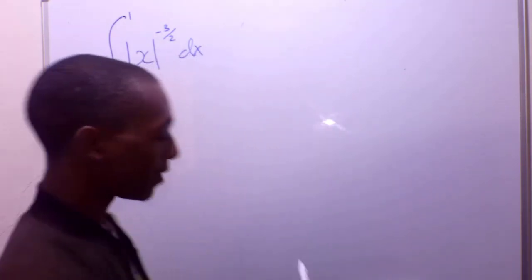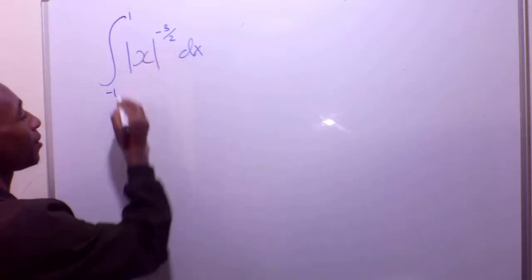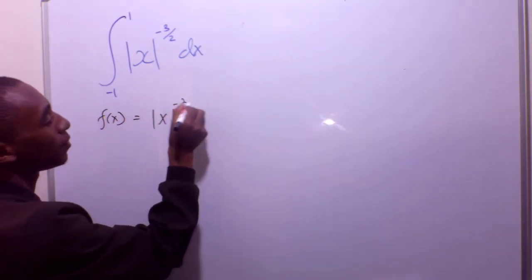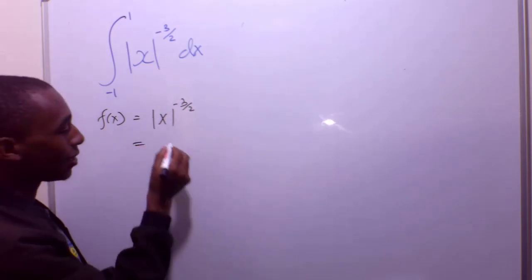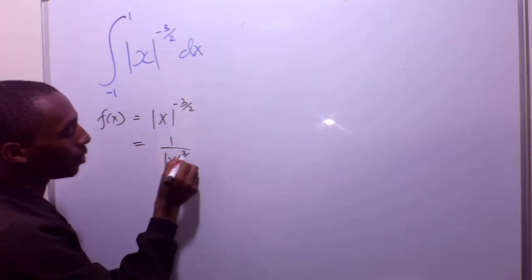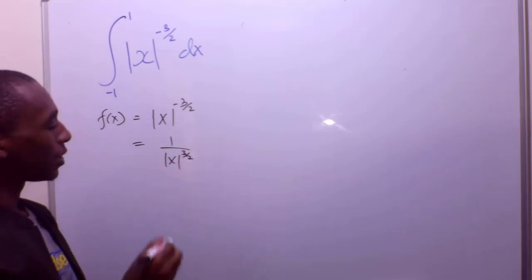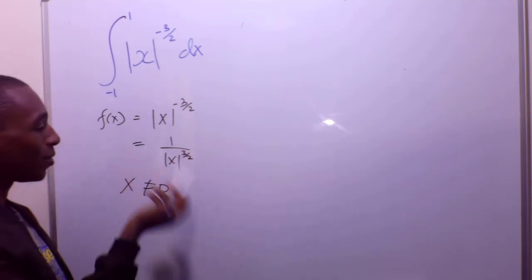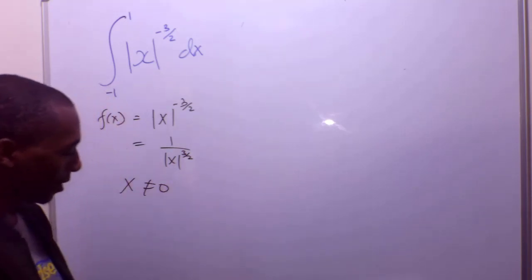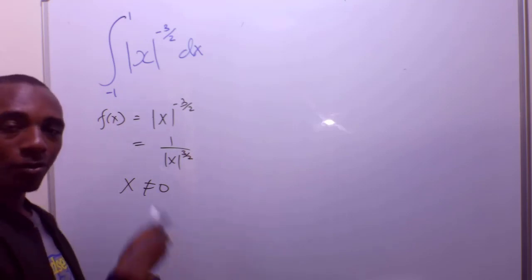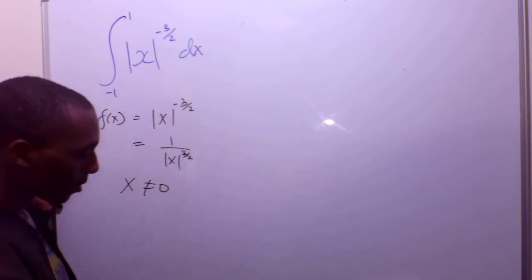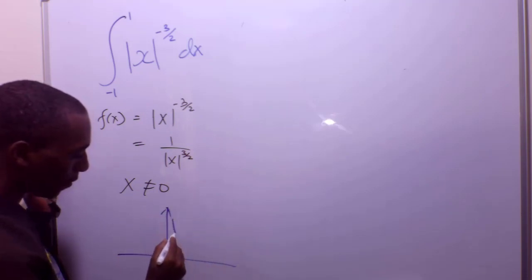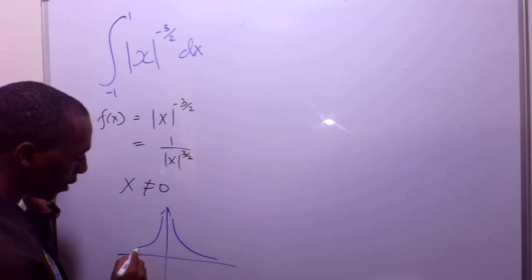Let's see how we work on this. If you look at this function, the absolute of x to the power negative 3 over 2, I could also write this as 1 over the absolute of x to the power 3 over 2. As you can see, x cannot be 0 because otherwise the function equals infinity. If you try to graph this function using some software or a calculator, it looks like this.